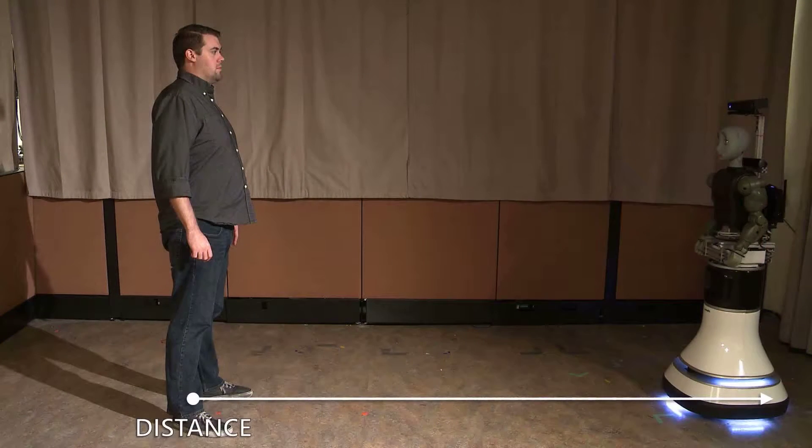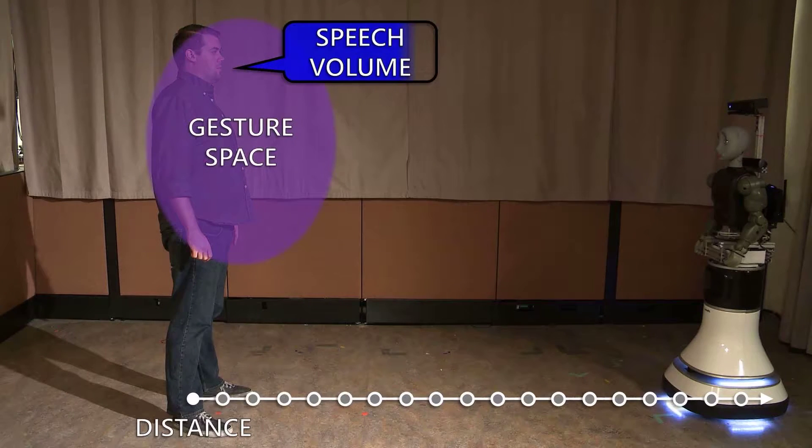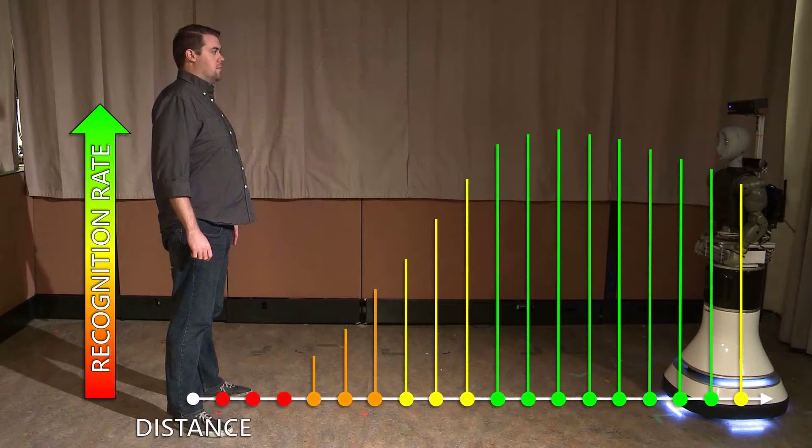In this work, we consider how the robot recognizes both speech and gestures in a face-to-face social interaction. The robot first imagines itself at thousands of different locations in a room. At each location, it predicts how loudly the person will speak and in what region of space the person will gesture. The robot then predicts how well it will automatically recognize speech and gestures and assigns a score to the location based on this prediction.